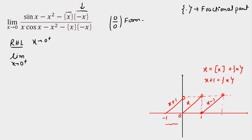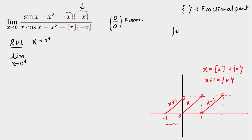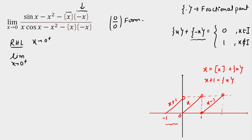Now I'll show how to tackle fractional part of minus x. We use the identity: {x} + {−x} = 0 when x is an integer, and {x} + {−x} = 1 when x is not an integer. For example, putting x = 1.5 gives a sum of 1. So for any non-integer value, fractional part of minus x equals 1 minus fractional part of x. This is always true for non-integer values.